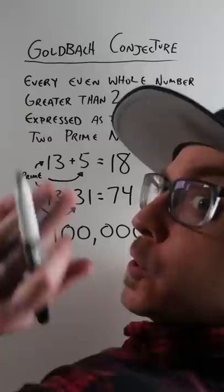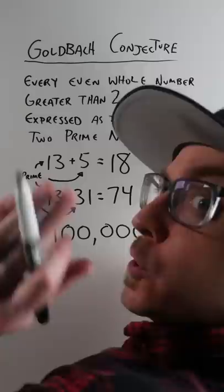In 1938, Niels Pippen did every single calculation by hand up to 100,000.